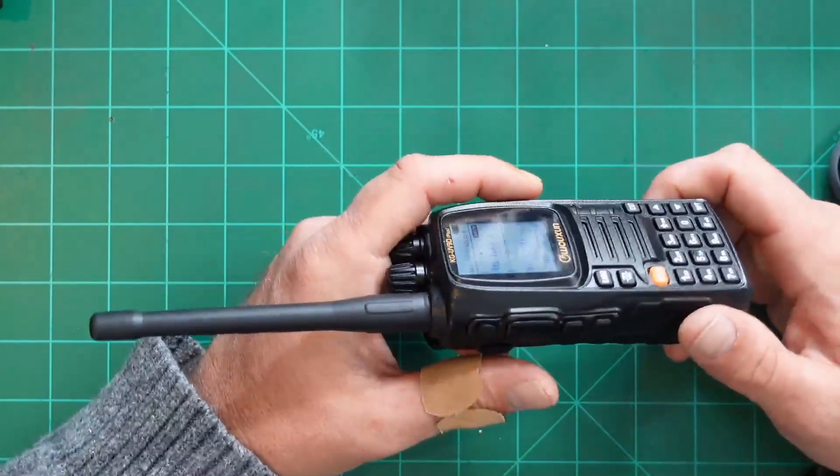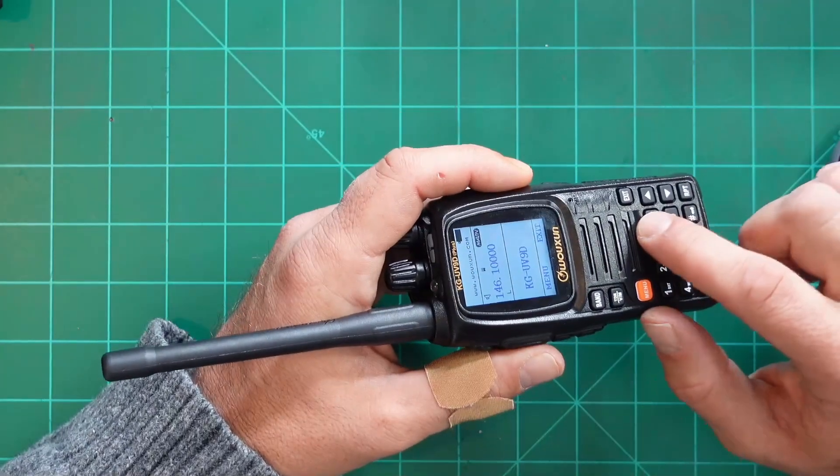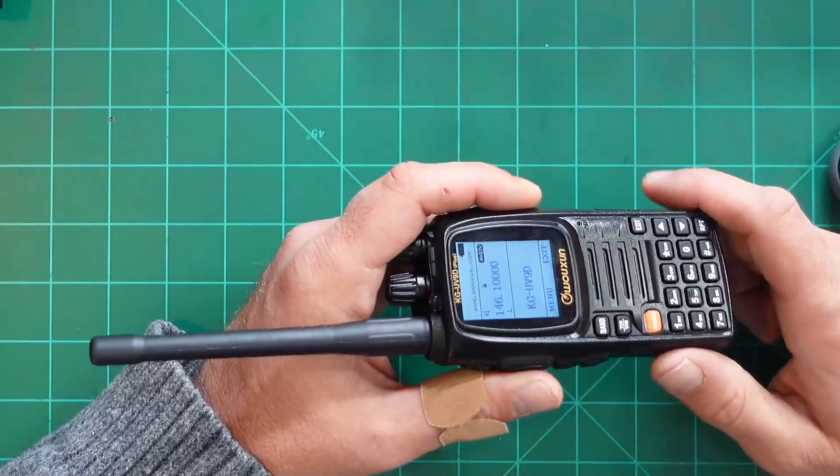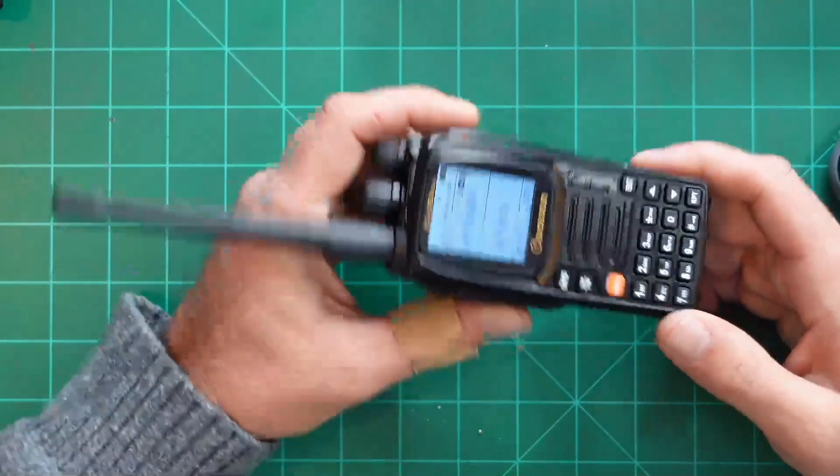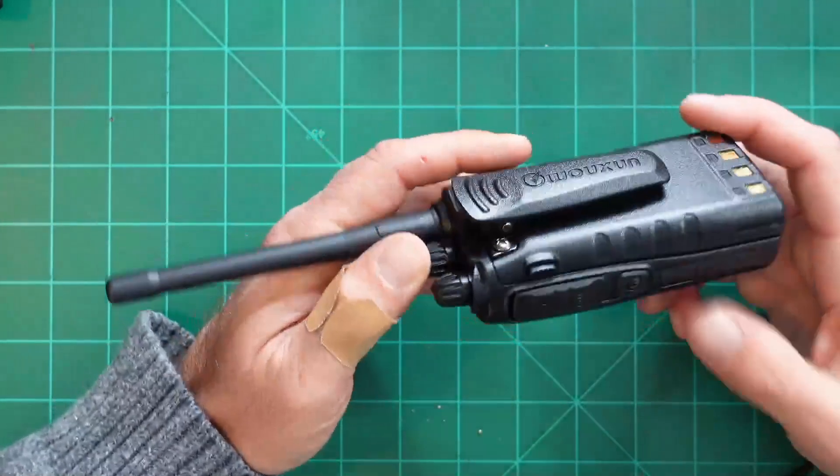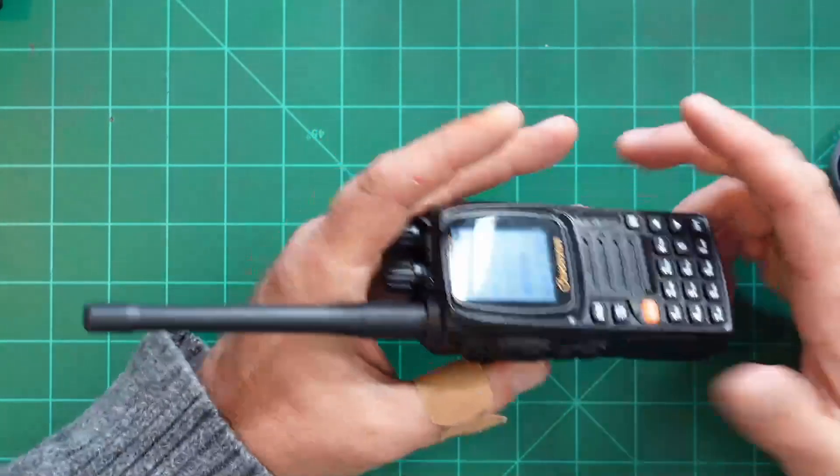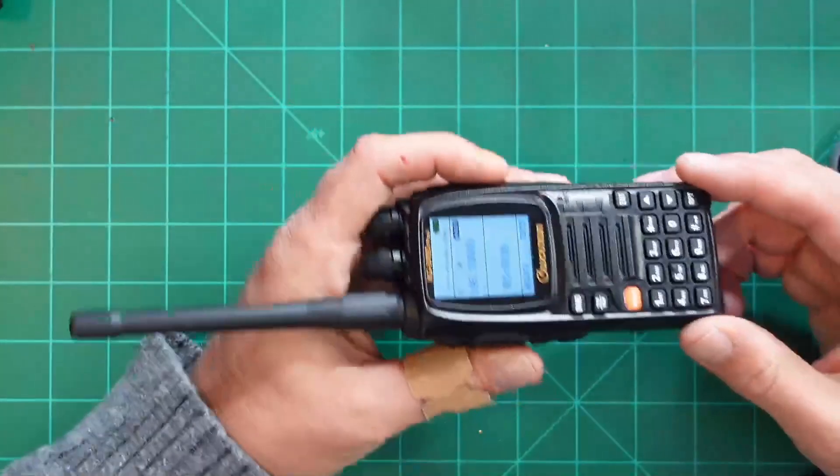I should mention the radio carries an IP55 rating, which means two things. The first five means that it protects you from limited dust ingress or a limited amount of dust is going to go into the radio. And the second five means that it's protected from low pressure water jets from any direction. So you should be able to spray this and it would be okay. We'll probably test that in a later episode.